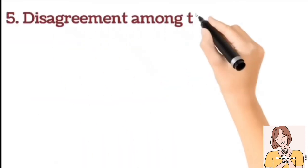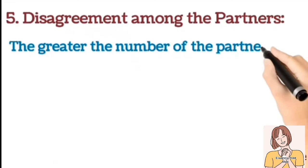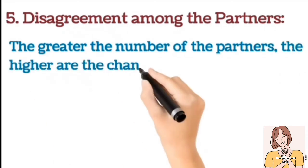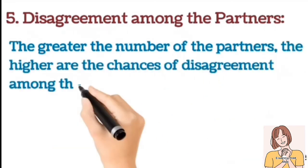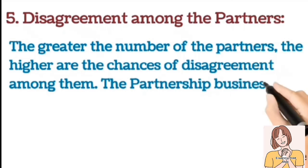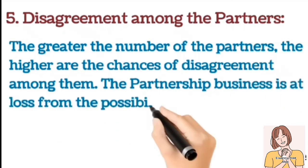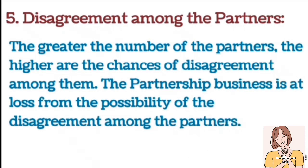Number 5: Disagreement among the partners. The greater the number of partners, the higher are the chances of disagreement among them. The partnership business is at loss from the possibility of disagreement among the partners.